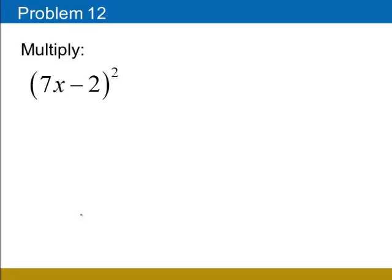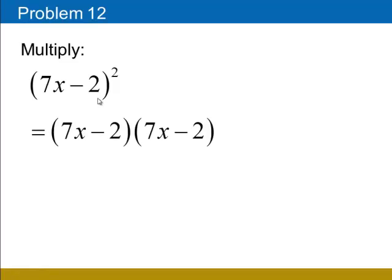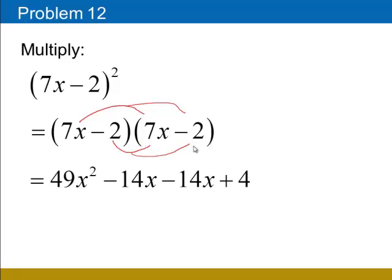In this example, we have a binomial that's being squared. Remember that any time we square something, we're really going to multiply it by itself. So we'll begin by multiplying 7x minus 2 times 7x minus 2. We distribute 7x to both terms inside the second parentheses: that gives us 49x squared minus 14x. Then we distribute the negative 2 and get negative 14x plus 4. We finish by combining like terms: negative 14x and negative 14x make negative 28x.